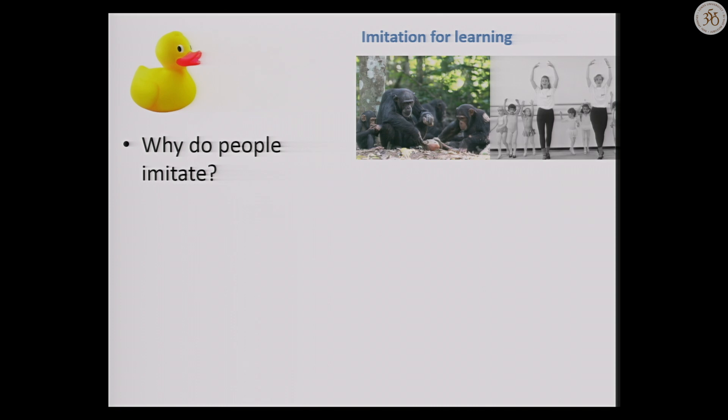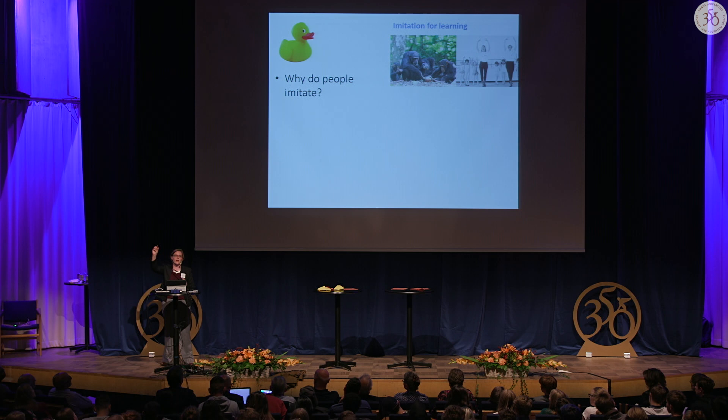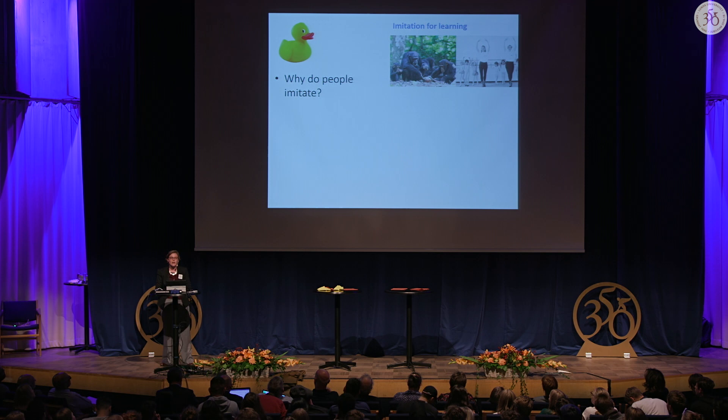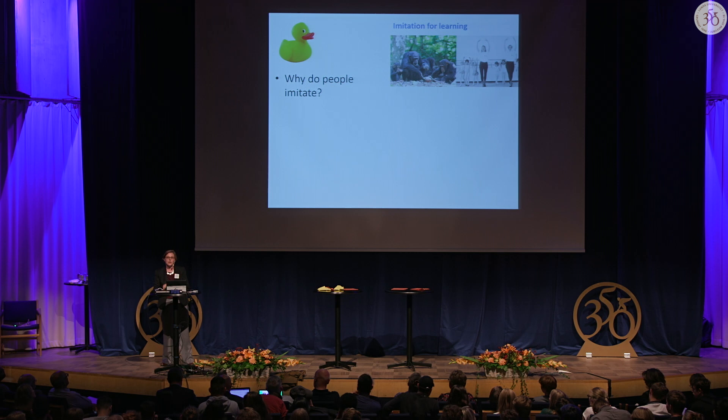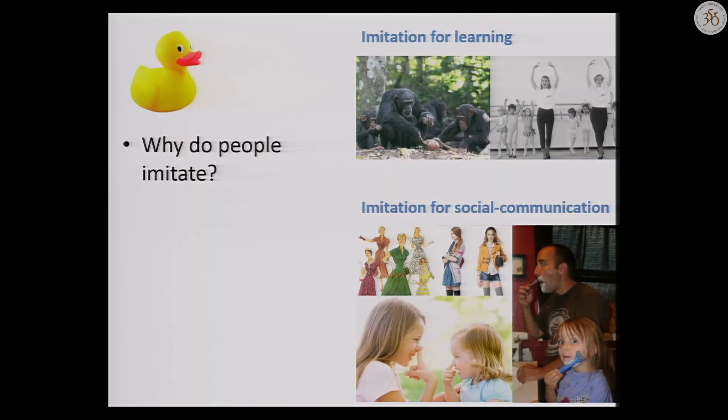There is imitation in other species, but it's much, much rarer. Whereas if you go to a nursery full of two- and three-year-olds, they're all copying stuff all the time, spontaneously, just because they do. There are two main theories. The dominant theory is that imitation is about learning new skills — if you're an ape learning to crack a nut or learning to do ballet, imitating another person would be a good way to learn. But what I want to argue today is that imitation also has a big role in being social and communicating with others.